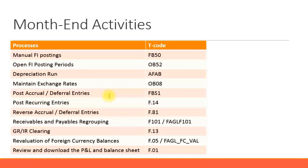You also have accrual and deferral entries. These are usually not done at the very end of the month — sometimes in the middle or beginning — but there will always be some accounting entries that need to be done at month-end. Use transaction code FBS1 to post accruals and deferrals. You can also do the reversal of accruals in consecutive months, either at the beginning or end of the month depending on how you have set up the reversal dates.